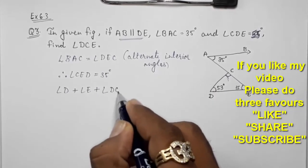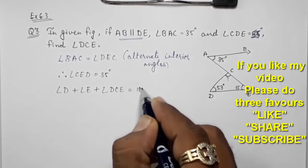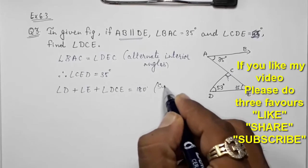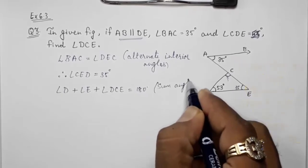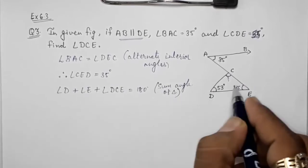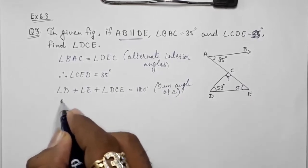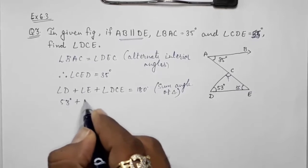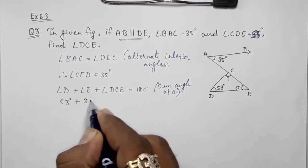By the angle sum property of a triangle, we know that angle D is 53 degrees plus angle E that is 35 degrees, and then DCE we have to find out equals 180.